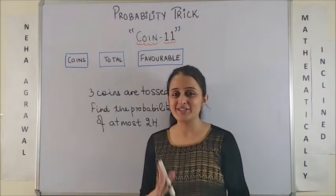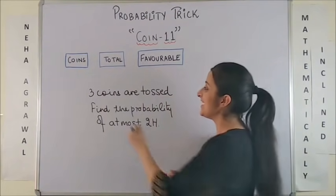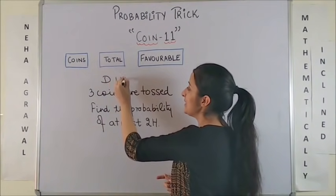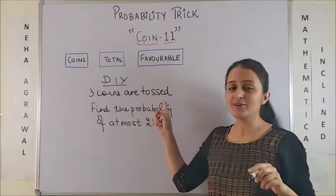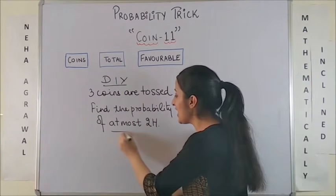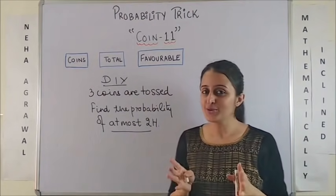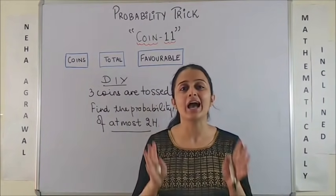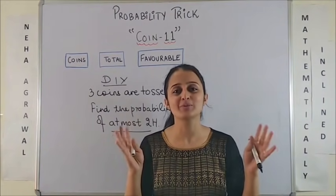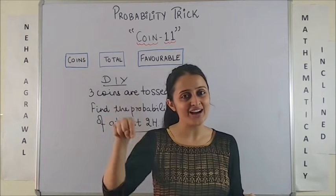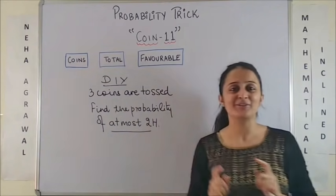So, for this quick video, there is a short DIY. That means do it yourself. So, 3 coins are tossed. You have to find the probability of at most 2 heads. So, use this coin 11 trick and get your answer super quick. I am waiting for your answers in the comment box below. Please have a look.